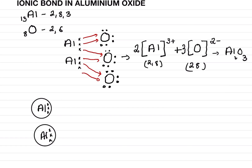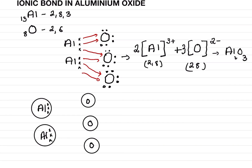Now for oxygen — there are three oxygens, so we make three circles. Write the symbol O in each and show six electrons per oxygen: one, two, three, four, five, six — for each of the three oxygen circles. Now show with arrows how the transfer of electrons takes place from aluminium to oxygen.